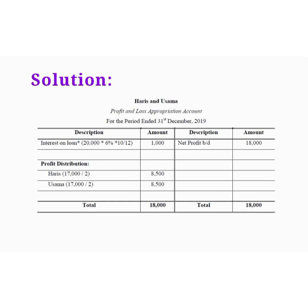There is no partnership agreement between the partners, so there is no need to provide or charge interest on capital — no need to record interest on capital on the debit side. However, the partner made a payment of loan to the firm. The rate of interest is not mentioned in the partnership deed, but the firm should make the payment of interest on loan. So, make the adjustment of payment of interest on loan.